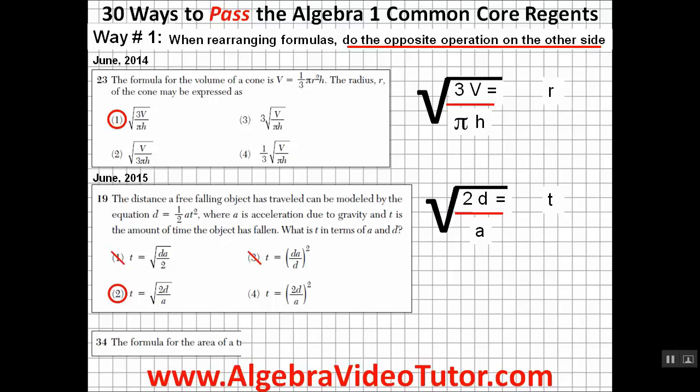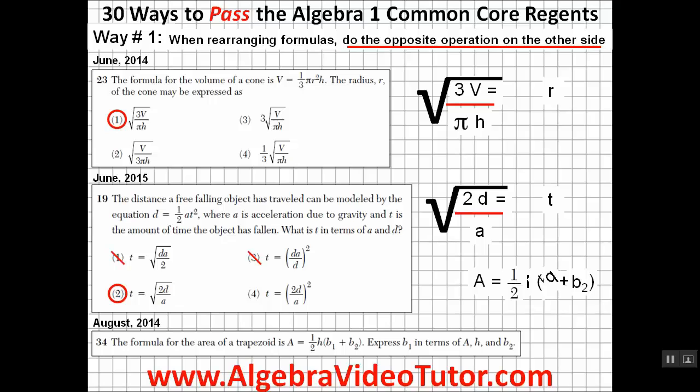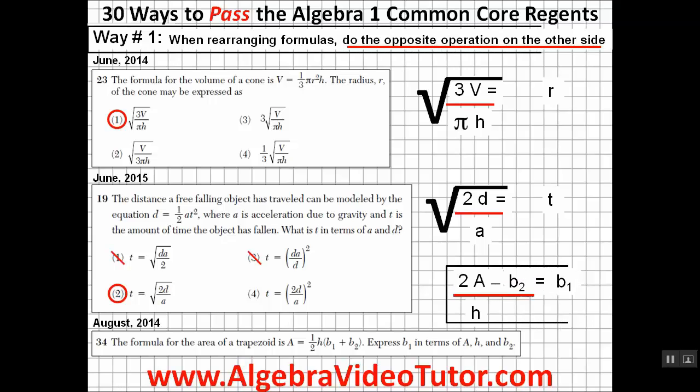And to sum it all up, we'll use this question from the August 2014 Algebra I Regents, where they give you the formula for a trapezoid. Since we need to isolate B1, we'll move H to the bottom of the other side and multiply the A by 2 to get rid of the one half. And since B2 is added to B1, we'll need to do the opposite operation on the other side.